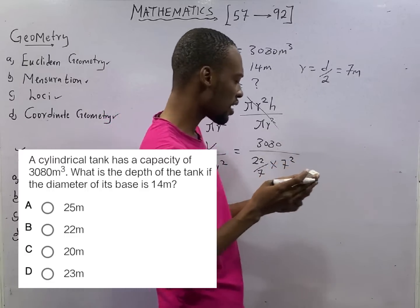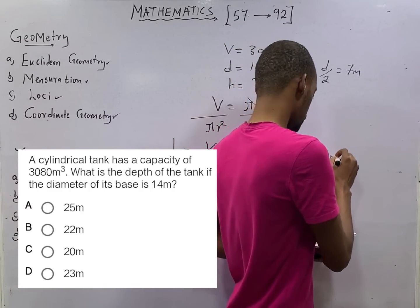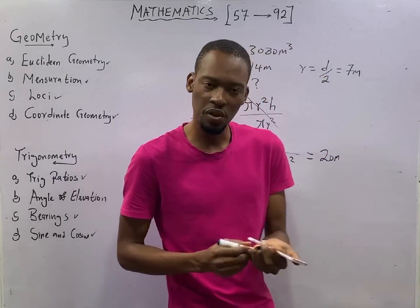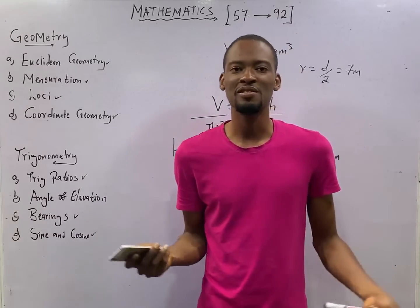Now this is 3080 over 22 over 7 times 7 squared. This is basically how it is done. This will give you 20 meters if solved correctly.